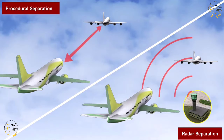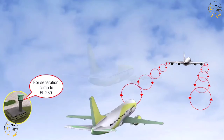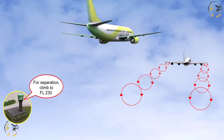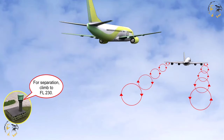Remember, separation comes in two basic forms: radar separation or procedural separation. Whenever the type of separation or minimum used to separate two aircraft cannot be maintained, or becomes insufficient to maintain safety, action shall be taken to ensure that a form of separation is implemented, such as vertical, horizontal, or a combination of the two, that continues to ensure the safety of the aircraft.